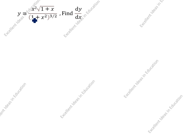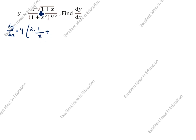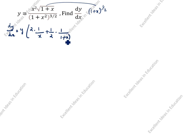How we will differentiate with the shortcut trick? dy by dx is equal to — we will write y here and open the bracket. x squared: the power is 2, so we write 2, then 1 by x. Then for the square root of (1 plus x), that is (1 plus x) to the power 1 by 2, we write 1 by 2 into 1 by (1 plus x). The numerator part is finished.